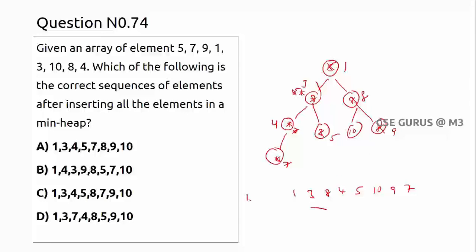The answer using level-order traversal is 1, 3, 8, 4, 5, 10, 9, 7. The question asks for the correct sequence in an array representation of a min-heap, which is in increasing order. For a max-heap it would be decreasing. Taking the level-order traversal, the answer is option E.